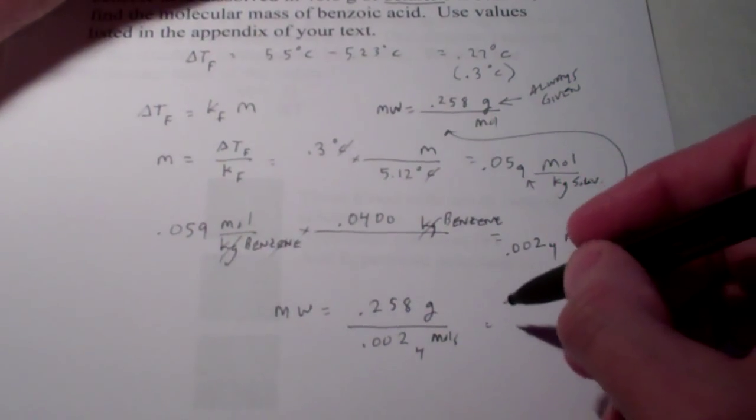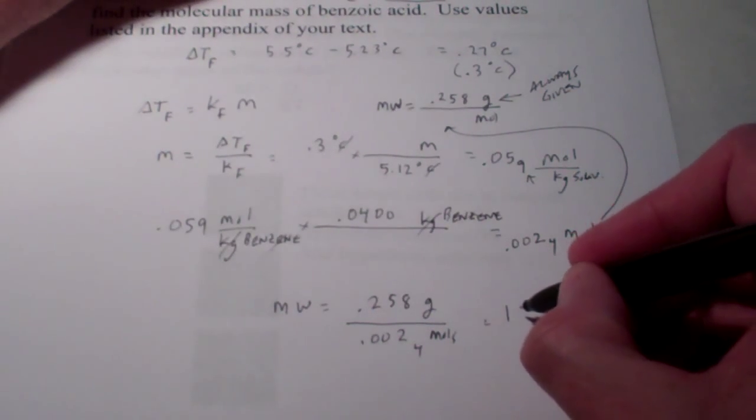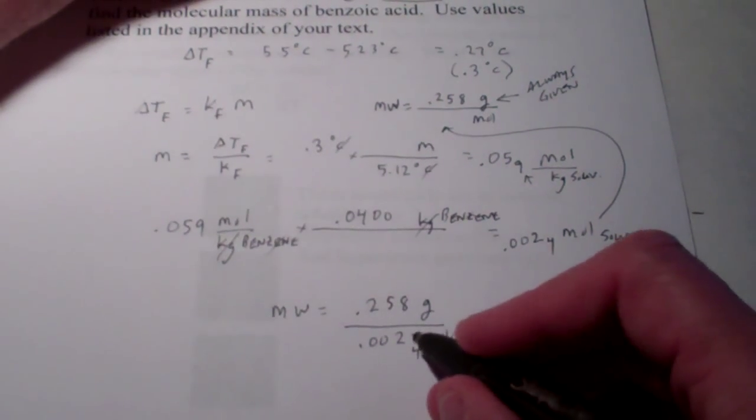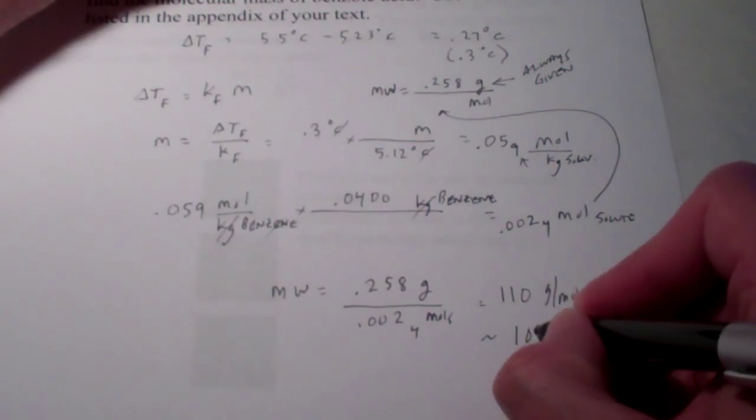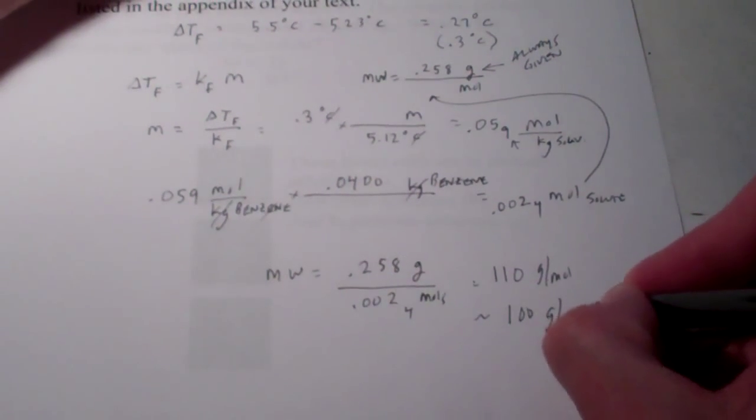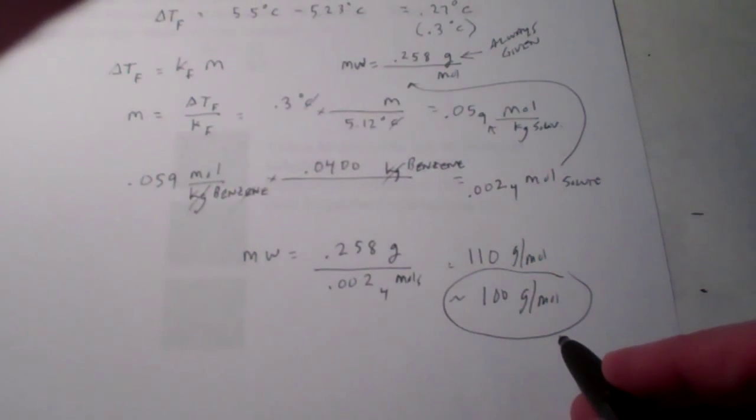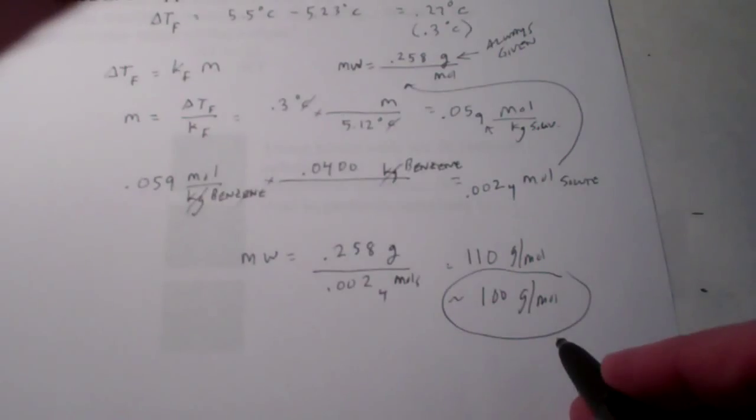If we're only allowed two significant figures, boy, we're going to have to say, well, I'd like to say 110 grams per mole. Sorry, that has two sig figs. We only have one. So, I guess we have to say 100 grams per mole would be our reported molecular weight. Once again, we're limited in our significant figures because of that darn temperature difference. We only have one sig fig to work with. Okay?